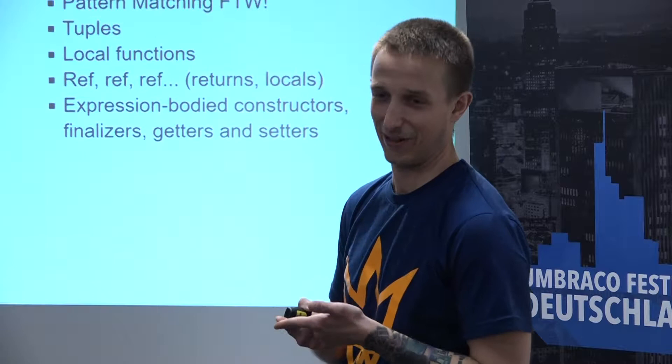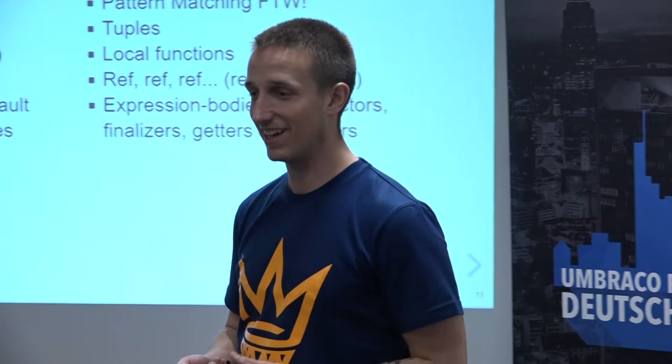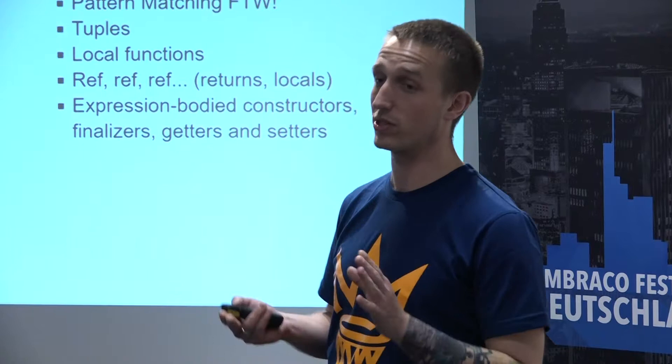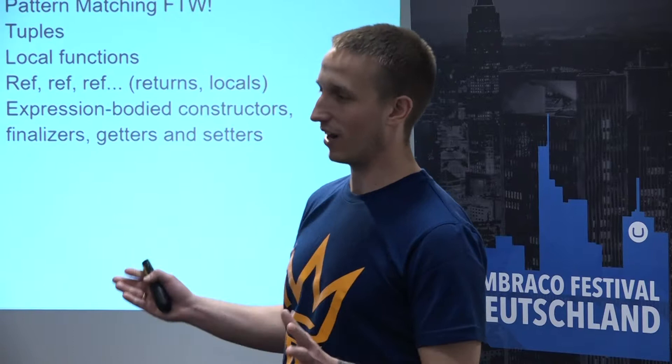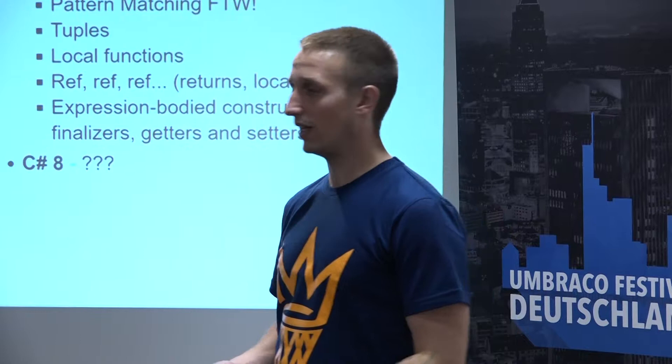Not as many developers are using those C# 6 features even now. And we have version 7, which also released a lot of amazing features. Out variables, pattern matching — I believe pattern matching and tuples are used really often by developers. All the rest, no one cares. Refs, returns, locals — they're all related to great performance improvements; we should all use them. Expression-bodied constructors — maybe ReSharper suggests you to rewrite your code, but most of us are not going to change, but we should.